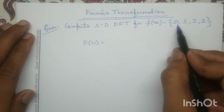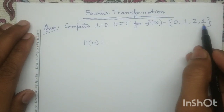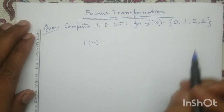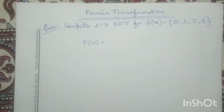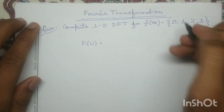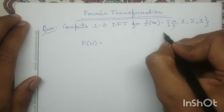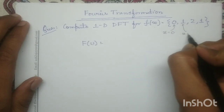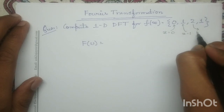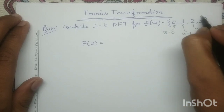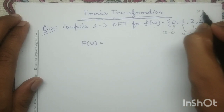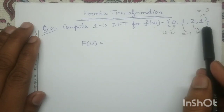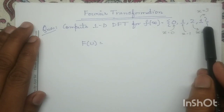You can see in the input there are four points: 0, 1, 2, 1. It's a four-point signal, where this point represents x=0, this point represents x=1, this point represents x=2, and this point represents x=3. So clearly, f(x) is a four-point input signal.